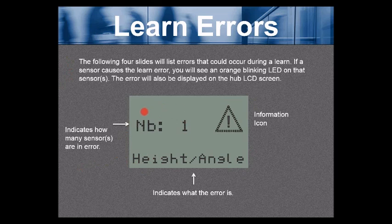Here, indicates how many sensors are in error. NB, number, abbreviation for number, and in this case we have one sensor in error. We also have an information icon, this triangle. Also, the error listed at the bottom of the screen, or bottom of the LCD screen, height angle, indicates what the error is. We'll address that shortly.